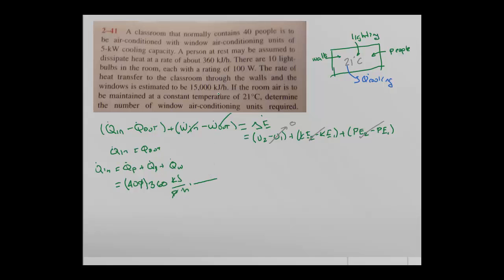We convert this to kilowatts: one hour is 3600 seconds, so we get the heat contribution from people in kilowatts. Now we add the heat from the lights. We have 10 lights, and each light consumes 100 watts. We have kilojoules per second, which is kilowatts, so we convert: one kilowatt equals 1000 watts.